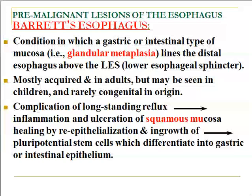Barrett's esophagus is mostly acquired in adults, but may be seen in children and babies as congenital. Because of the chronic reflux of gastric content toward the lower end of the esophagus, this results in inflammation, ulceration, and ulceration of the squamous mucosa that heals by re-epithelization and ingrowth of pluripotential stem cells, which differentiate into gastric or intestinal epithelium — the metaplastic tissue.